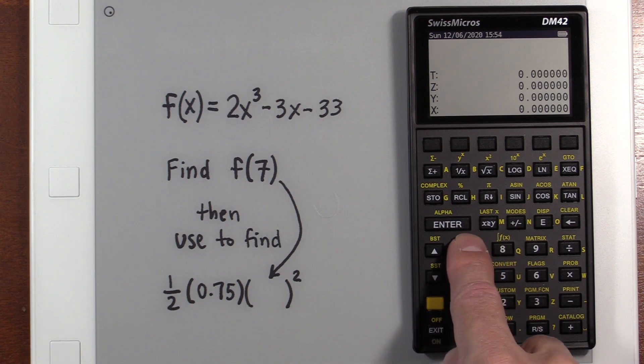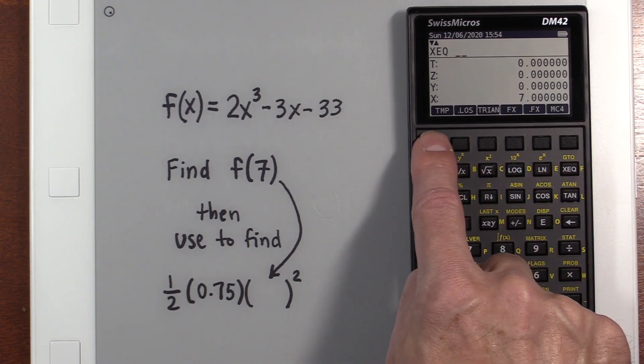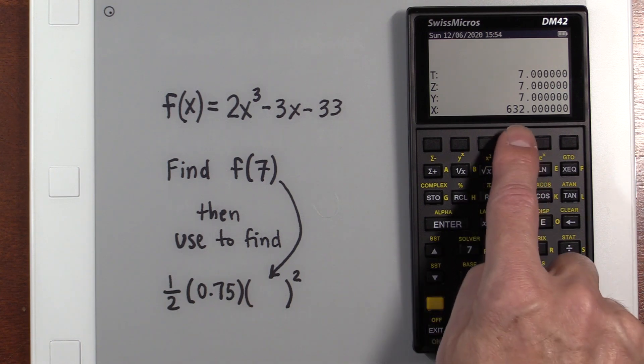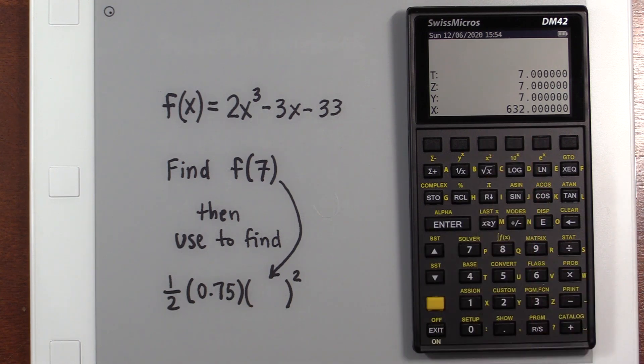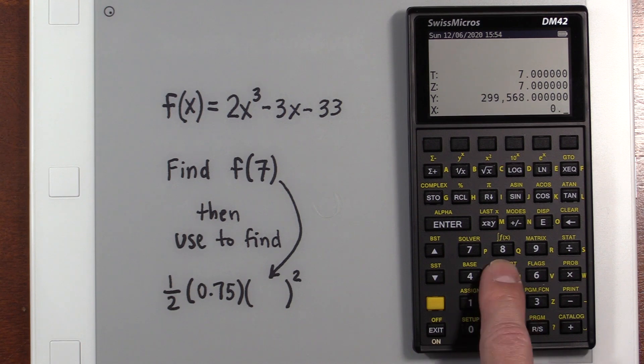When we put a seven on the stack, we then execute our program, which is called temp. And we get the result, 632. Now let's say we want to take that and plug it in here. It's simple. We just take that 632 and we square it. We multiply by 0.75 and then we multiply by a half. We get our final answer.